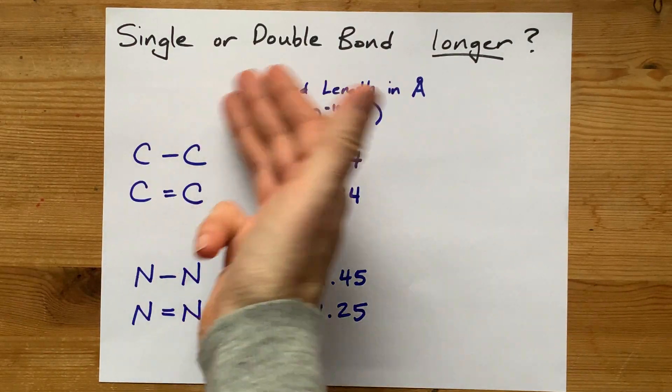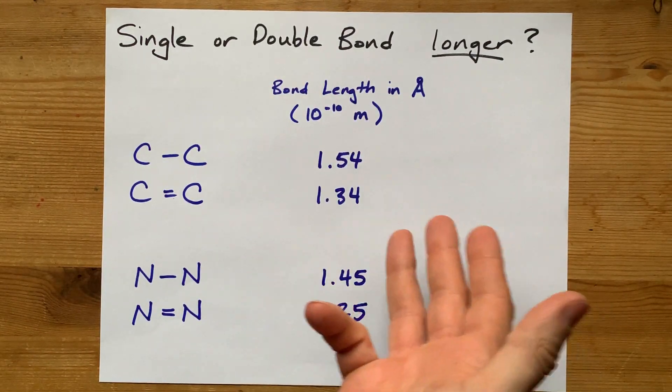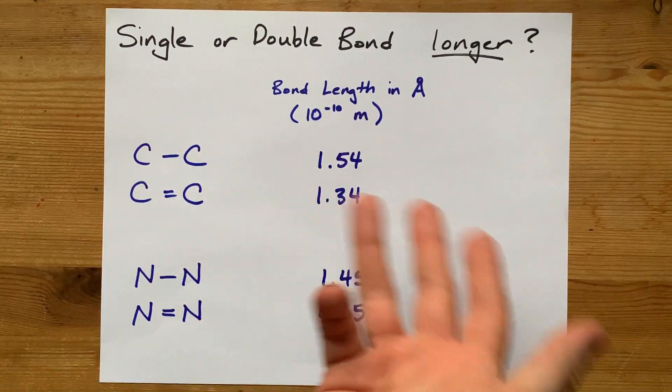Which is longer, a single or double bond? The answer is single bonds are longer than double bonds.